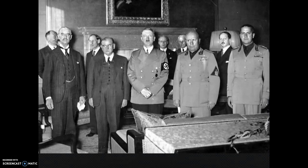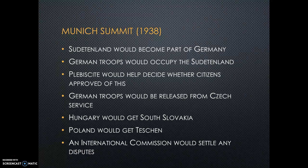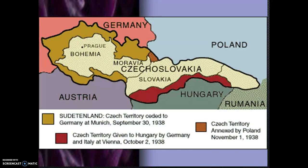Mussolini, alarmed at the possibility of being dragged into a war in Europe that he wasn't prepared for, called for a meeting between Britain, France, and Germany in Munich. Czechoslovakia was not invited. The Munich summit ran from September 28th through the 30th of 1938. The Munich Agreement did the following: the Sudetenland would become part of Germany; German troops would occupy the Sudetenland; a plebiscite would help decide whether citizens approved; German troops would be released from Czech service; Hungary would get South Slovakia; Poland would get Teschen; and an international commission would settle any disputes. Czechoslovakia was told by Britain and France that if it did not agree, it would be fighting Germany alone. Without a choice, they agreed.